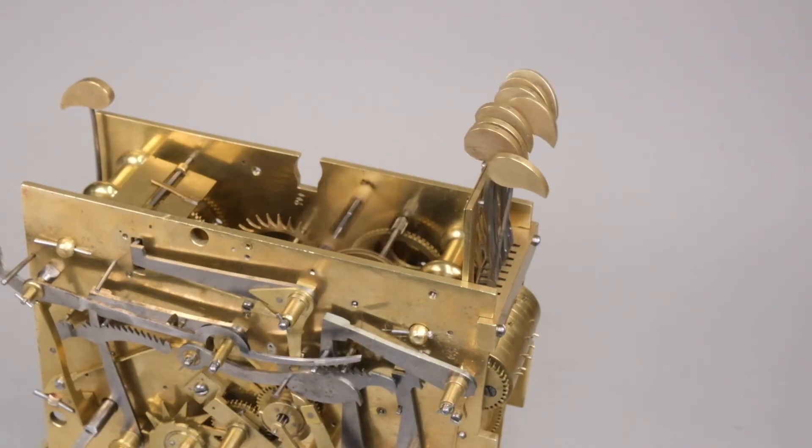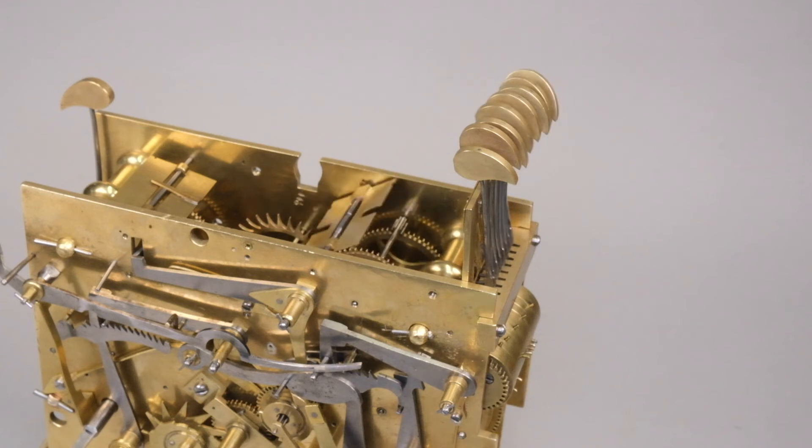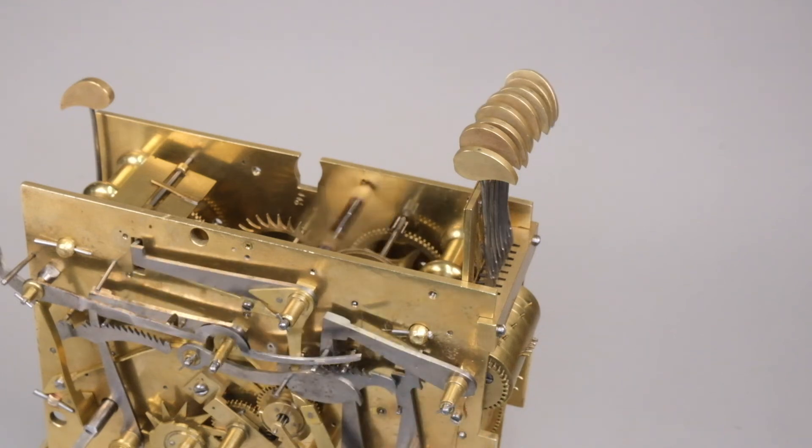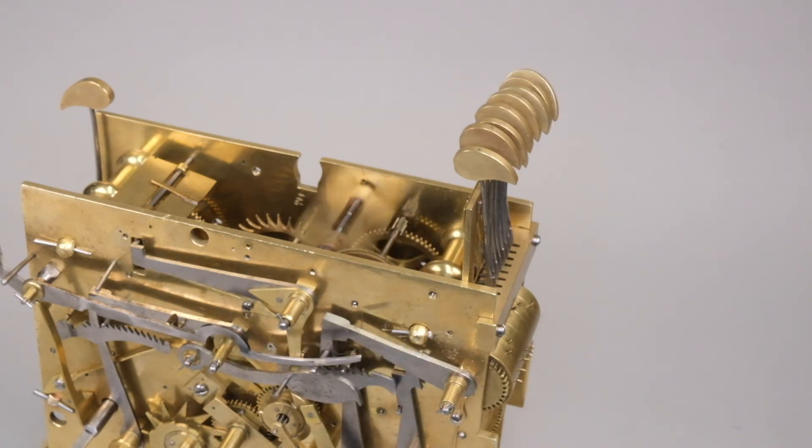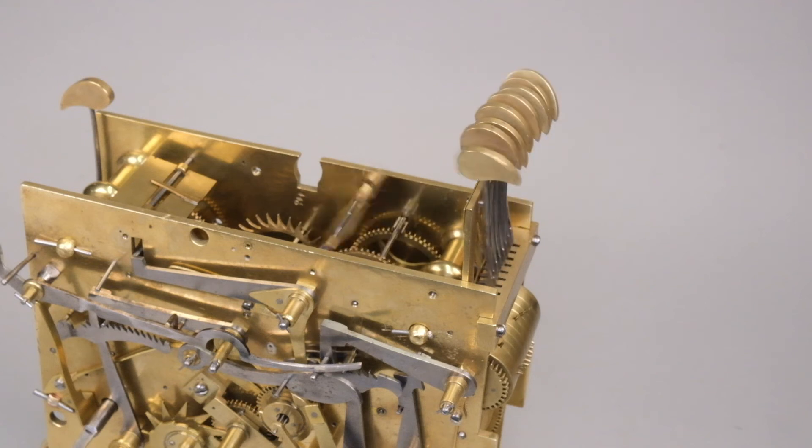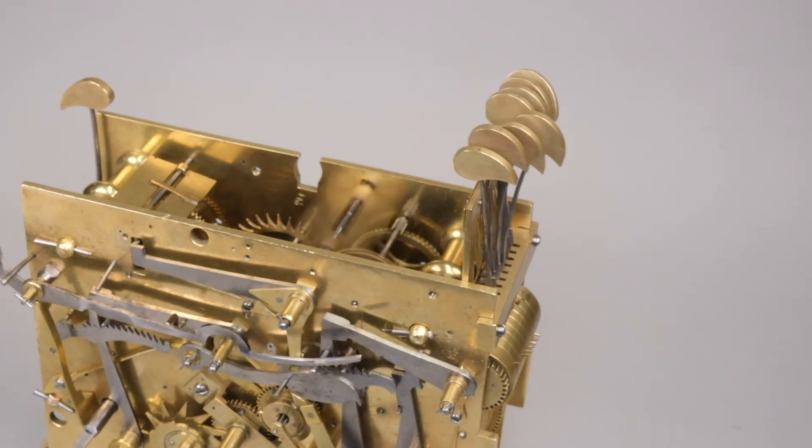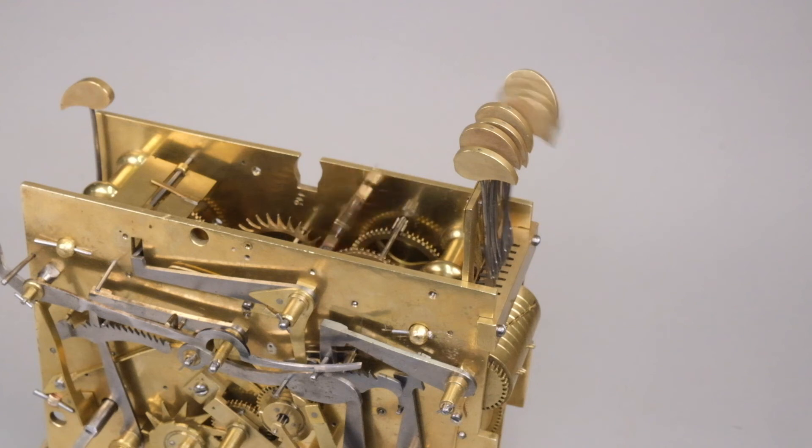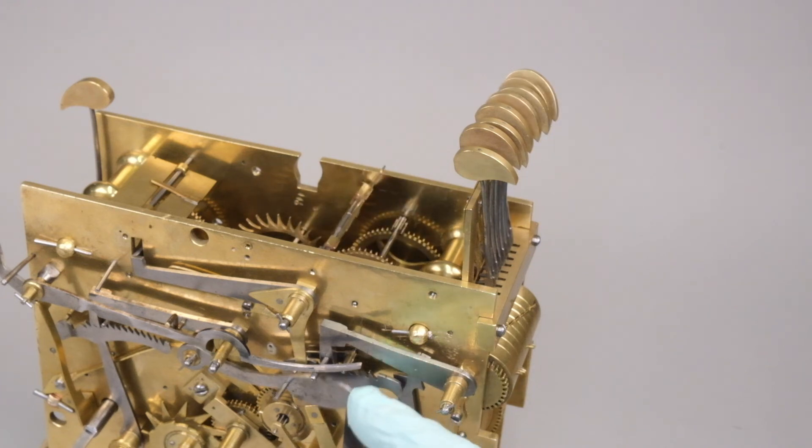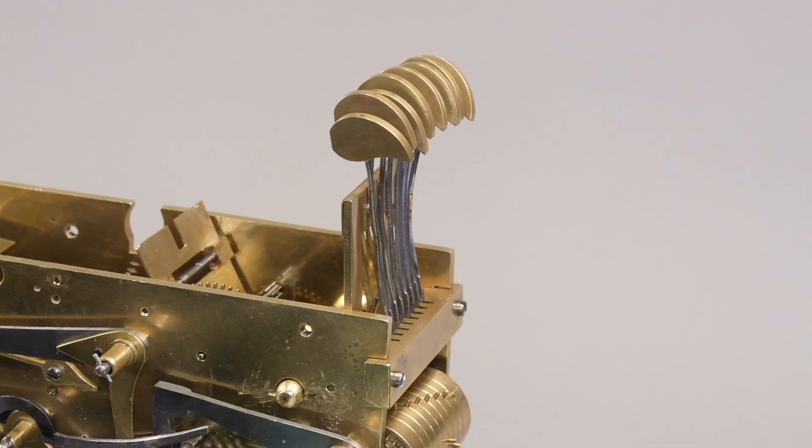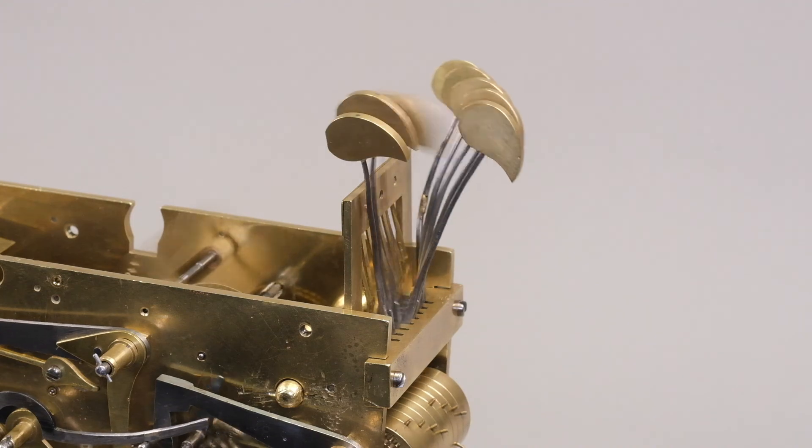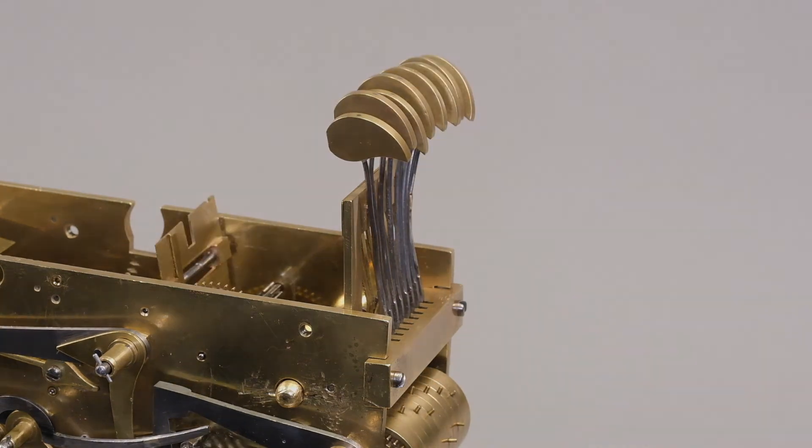And here we see the new or repaired fly and re-pivoted arbor in operation. And you can see that at the end of every striking operation, the fly stops in a different position, which tells me that it's slipping on the arbor as it should, and the bouncing of the striking train has been massively reduced. So thanks for watching. We'll be back soon with the next installment of this pretty sort of major intervention. And as always, please like and subscribe and leave your comments below. Bye for now.